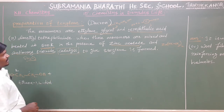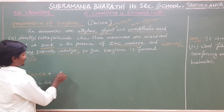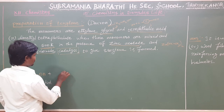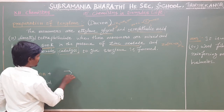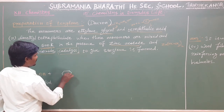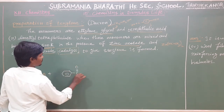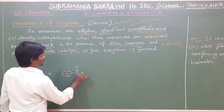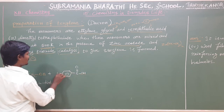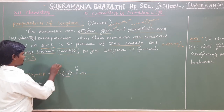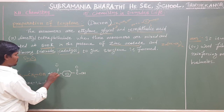Plus terephthalic acid. Terephthalic acid is a benzene ring. On the benzene there is a carboxylic acid group — C double bond O — with an OH group attached.